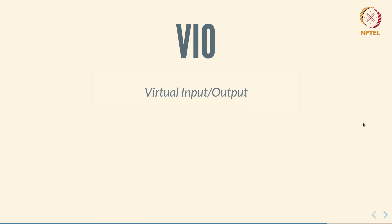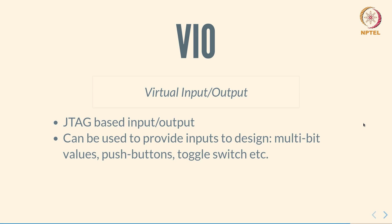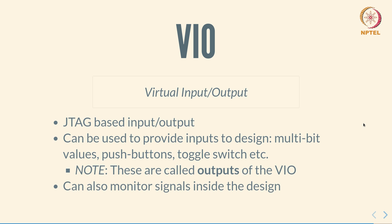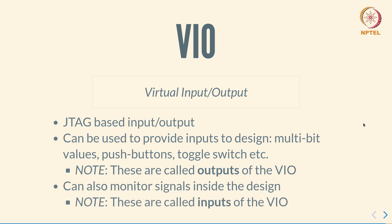VIO stands for Virtual Input Output. This is another mechanism used to interact with an FPGA, especially in situations where you do not have direct access to push buttons or LEDs. It is again JTAG-based and can provide various kinds of inputs to the design — for example, multi-bit values can be directly typed in, push buttons can be emulated, toggle switches and so on. Things that are inputs to the design are called outputs of the VIO, and signals monitored from the design are called inputs of the VIO.